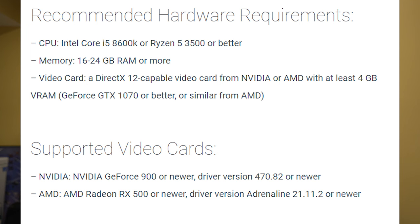Now let's look at the recommended hardware requirements. For CPU, they're talking about an Intel i5-8600K — the K meaning it's unlocked so you can overclock — or a Ryzen 5 3500 or better. Memory: 16 to 24GB of RAM, so 16 or more. 32 is my personal preference. Video card: a DirectX 12 capable card from NVIDIA or AMD with at least 4GB of VRAM. They recommend a GTX 1070 or better, or similar from AMD.